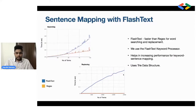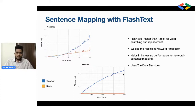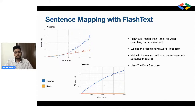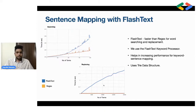Coming to FlashText — it's a small but very useful library because it is much faster than regex for searching and replacing words. The major uses of FlashText are word replacement and word searching. If you see the graph of FlashText versus regex on the searching criteria, you can see that as the number of terms increases, regex takes more time while FlashText takes very little. The reason it's fast is that it uses a trie data structure — a very efficient data structure for accessing text data, also used in mobile contacts apps.